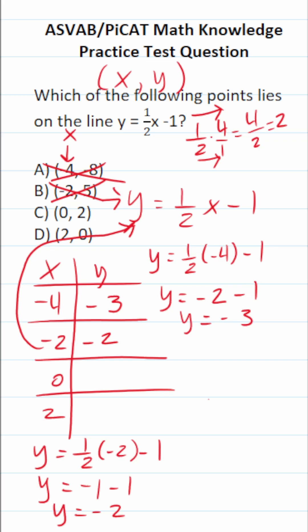Let's check when x equals 0. This becomes y equals one-half, x is 0, minus 1. Y equals one-half times 0. Anything times 0 is 0, so this just becomes negative 1. So the point 0, negative 1 is on the line. 0, 2 is not on this line.